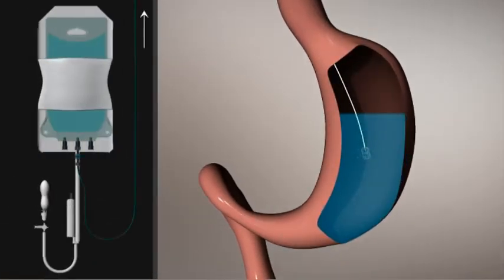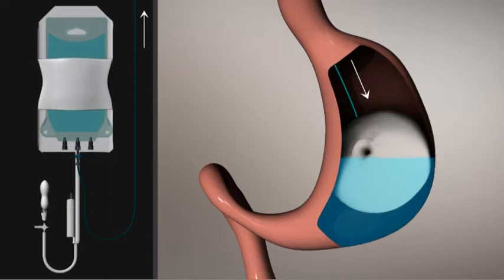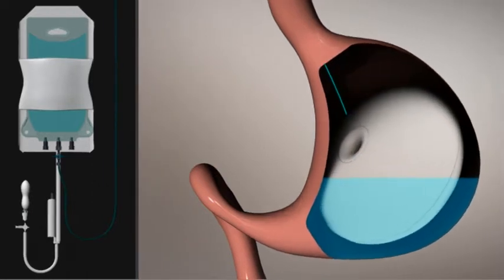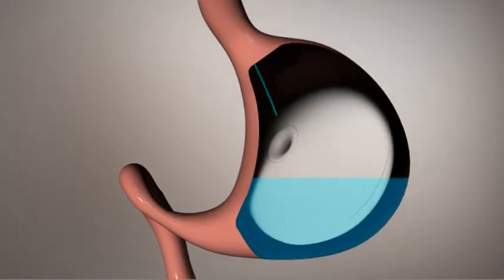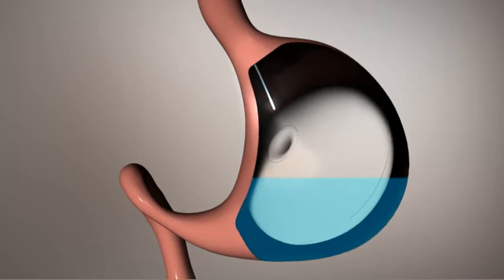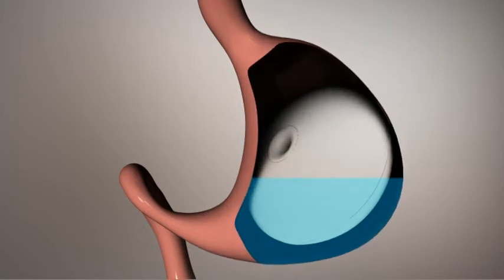Once the capsule is swallowed and enters the stomach, it degrades. The Ellipse can then be filled with 550ml of fluid in under 10 minutes. After filling is complete, the catheter is detached and removed from the mouth.